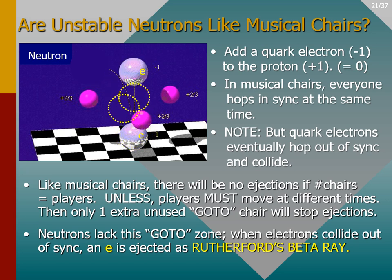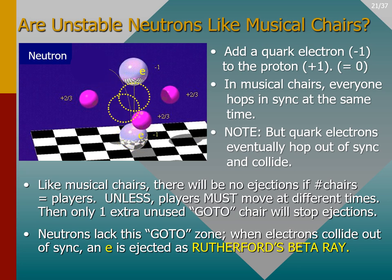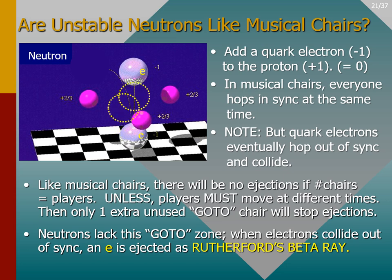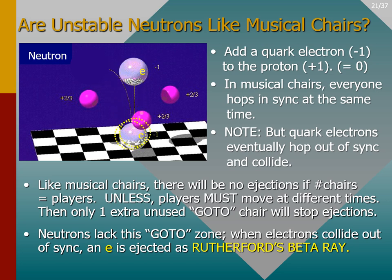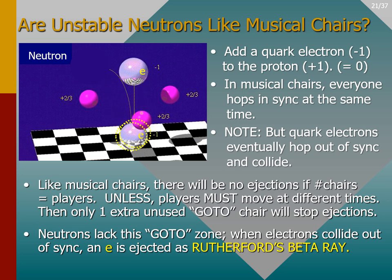This always eventually happens, and then one of the electrons is ejected from the neutron, and the neutron turns back into a proton. The neutron behaves as an unstable oscillator until it decays back into a proton, and then it can practically exist forever as a stable oscillator. The ejected electron is what Rutherford identified as a beta ray, which he found could be stopped by a quarter-inch piece of aluminum. The modern name for this process is neutron beta decay.